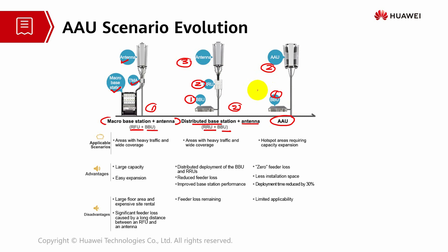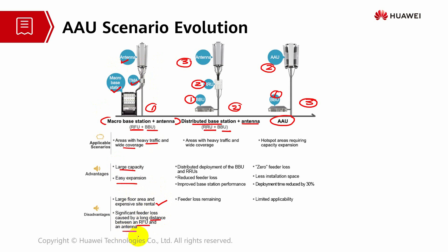There are application scenarios for each approach. For macro base station and antenna, it can be deployed at areas with heavy traffic and void coverage. Advantages include large capacity and easy expansion. However, disadvantages are large floor area and expensive site rental, plus significant feeder loss caused by the long distance between the RFU and antenna system.